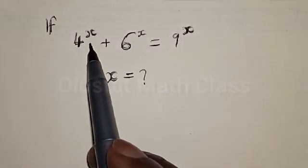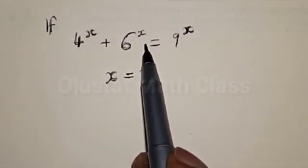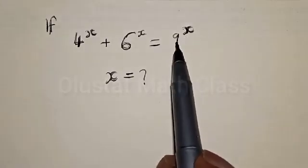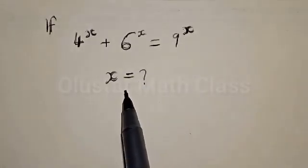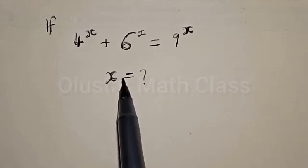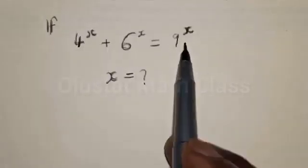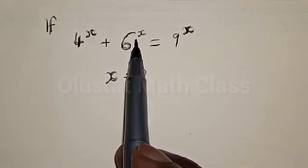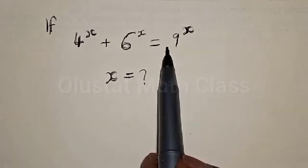If 4 raised to power x plus 6 raised to power x is equal to 9 raised to power x, what is the value of x? Welcome to my class. In today's class, we want to find the value of x from this given exponential equation: 4 raised to power x plus 6 raised to power x is equal to 9 raised to power x.